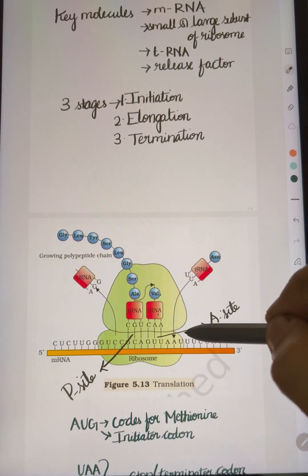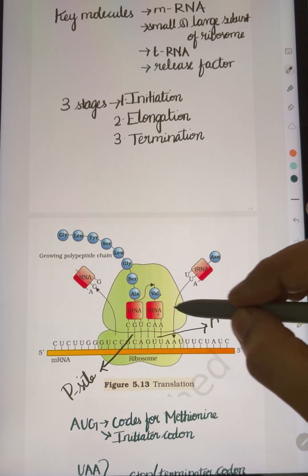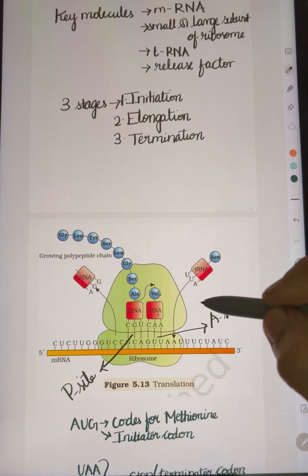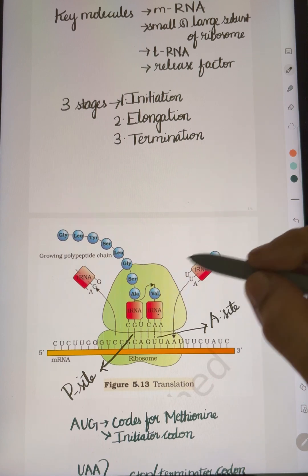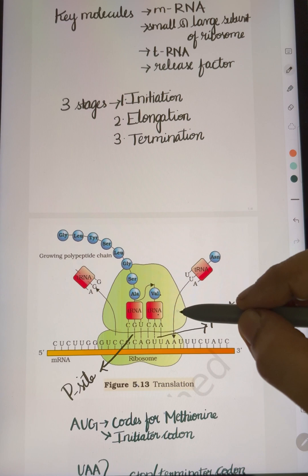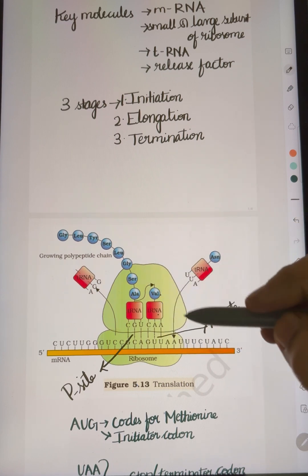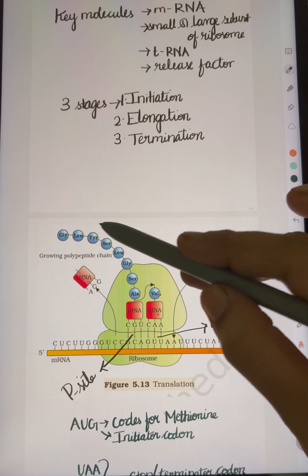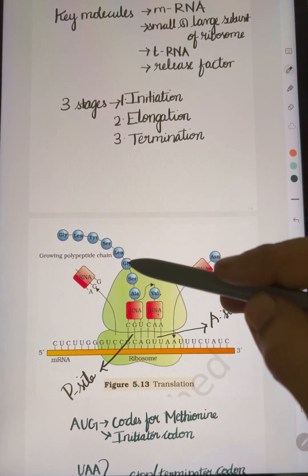Until it encounters the stop codon. There is no tRNA for stop codons. Release factor binds to it. The ribosome will get dissociated and the polypeptide chain will get released.